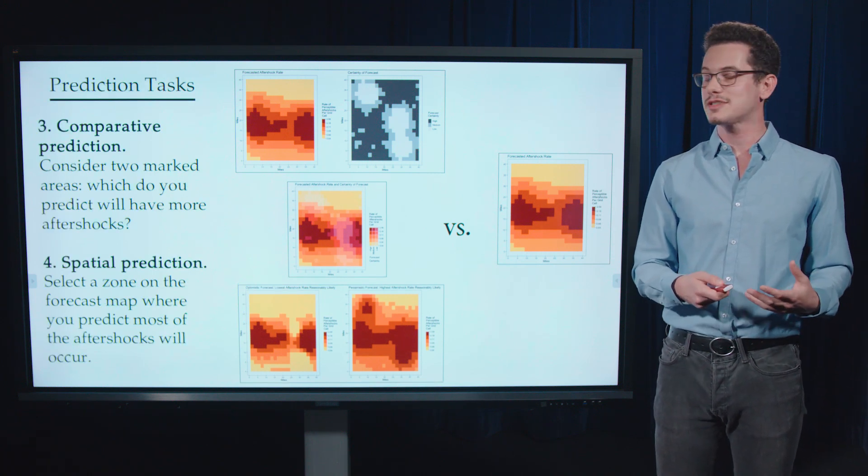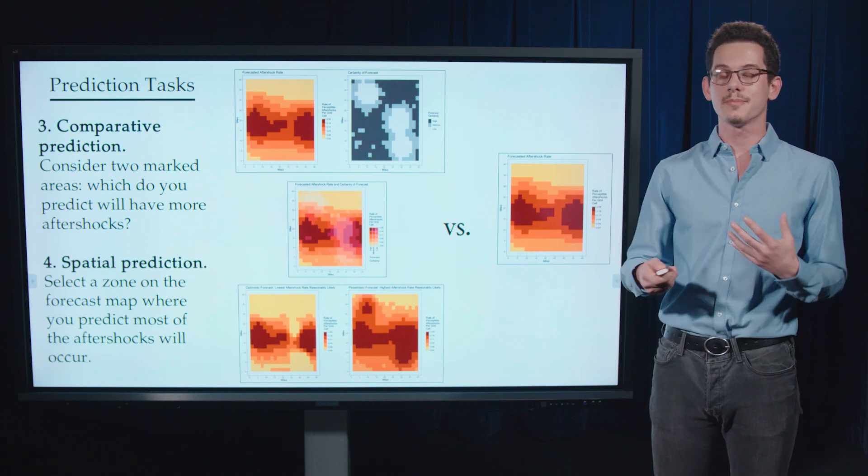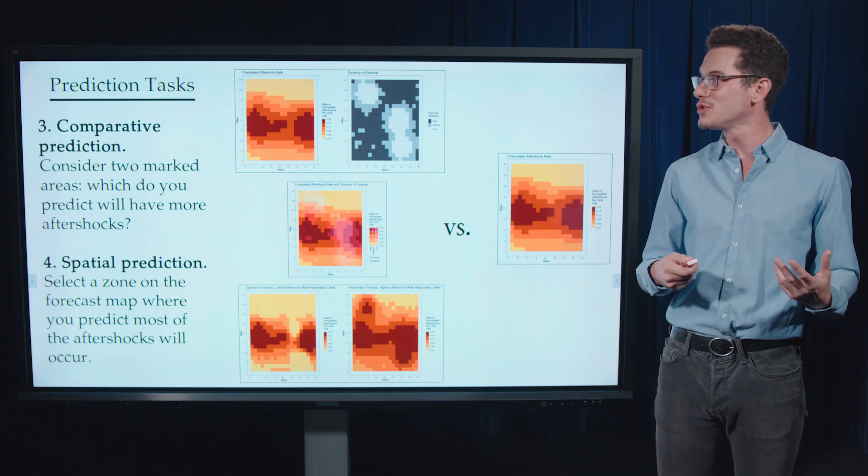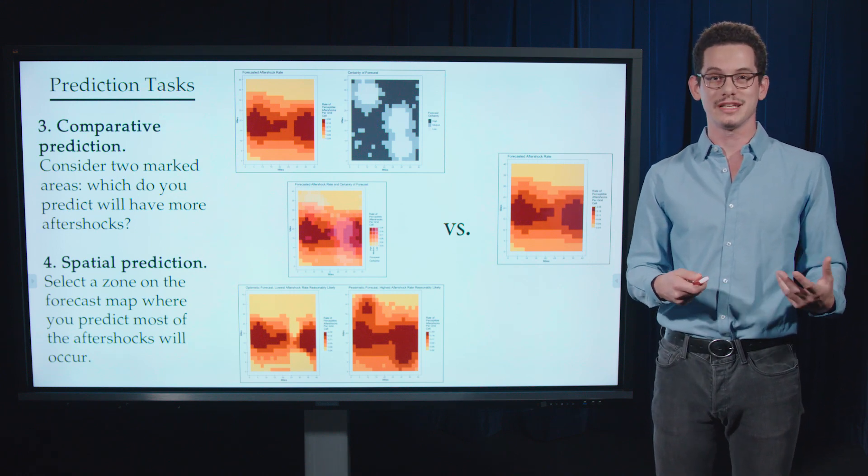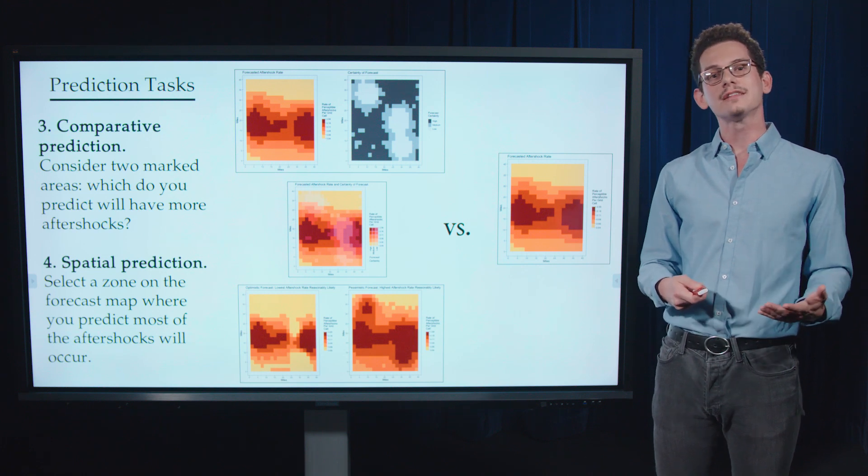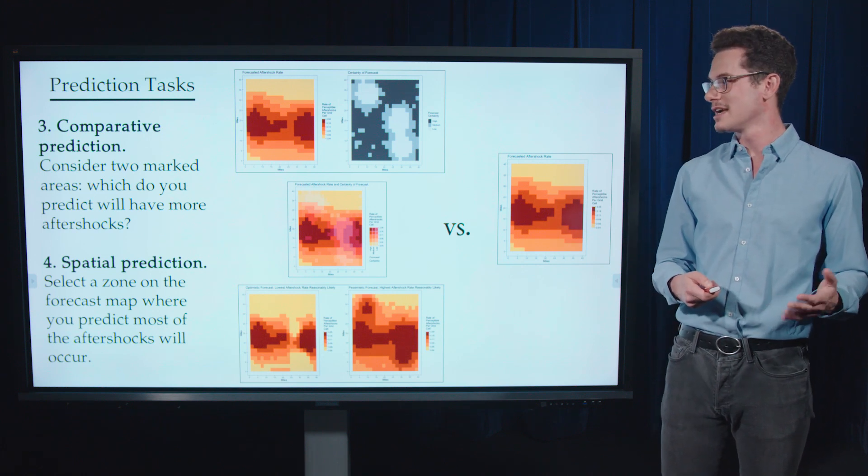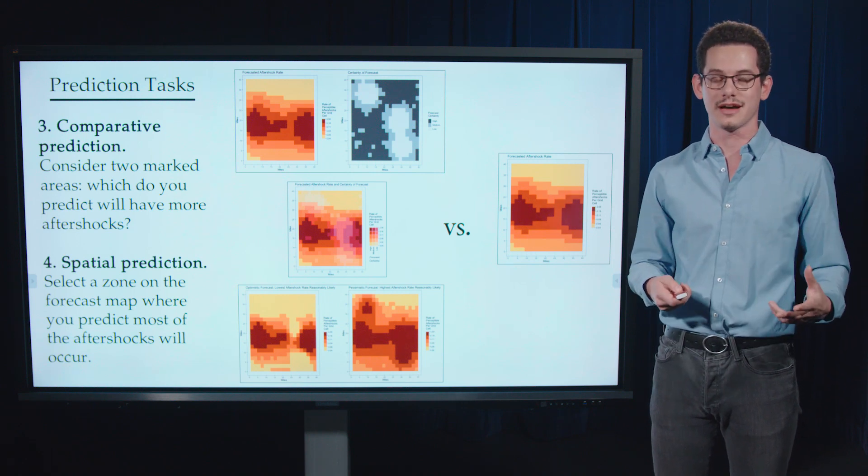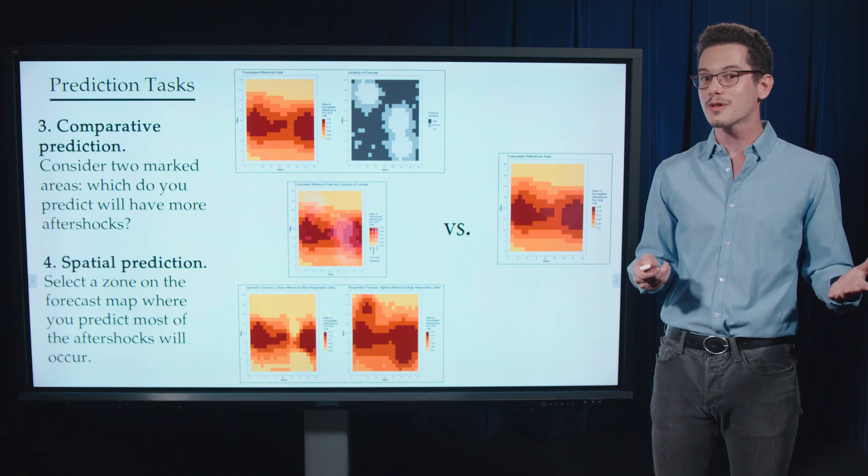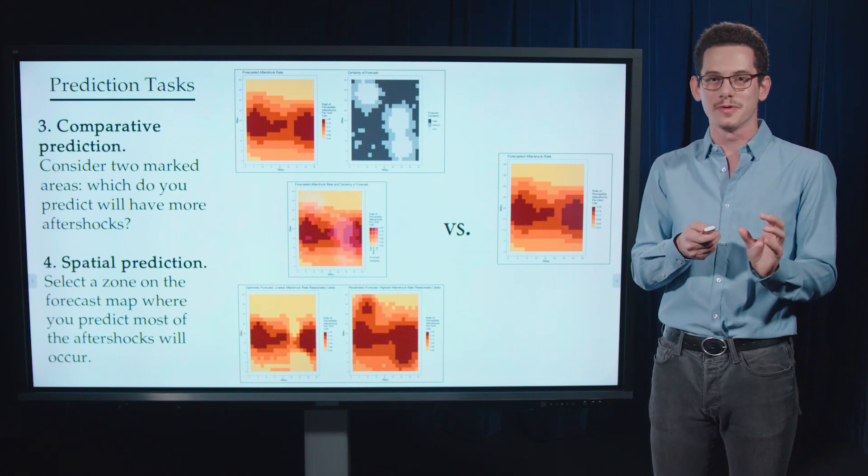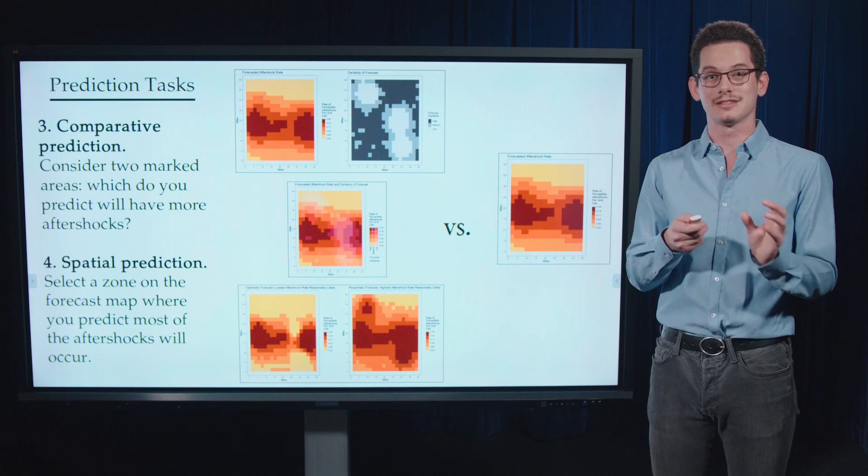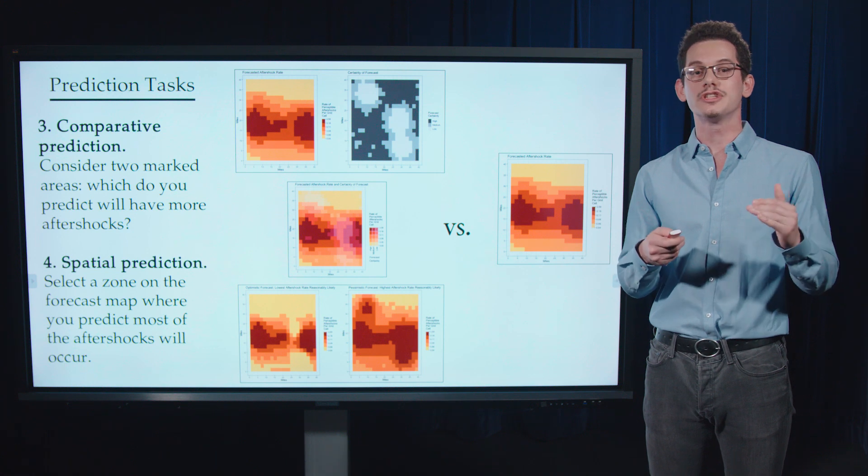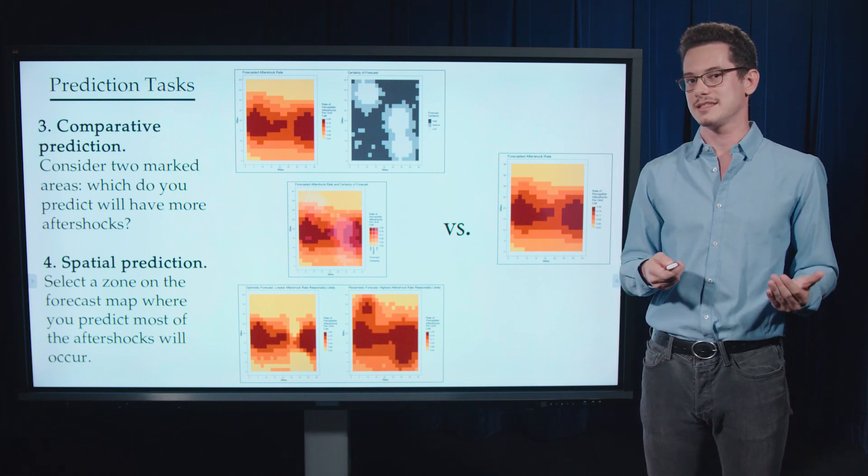Secondly, we're asking users to do several prediction tasks. So one is a comparative task where they have to compare which between two marked areas they predict will have more aftershocks. And finally, there's a spatial prediction task where they have to select a zone on the forecast map where they predict most of the aftershocks will take place. So there's 60 in the total map, but which smaller sub-region do they expect most to take place? And they're incentivized in this task to give a region that's as small as possible but as big as necessary.